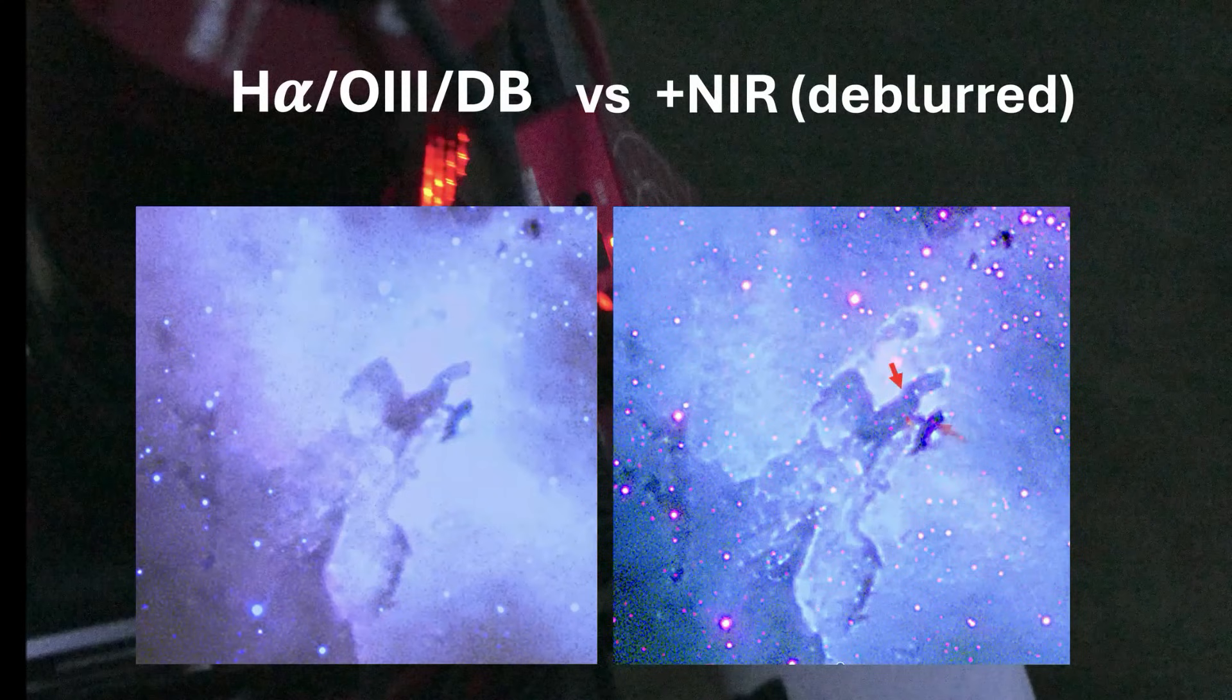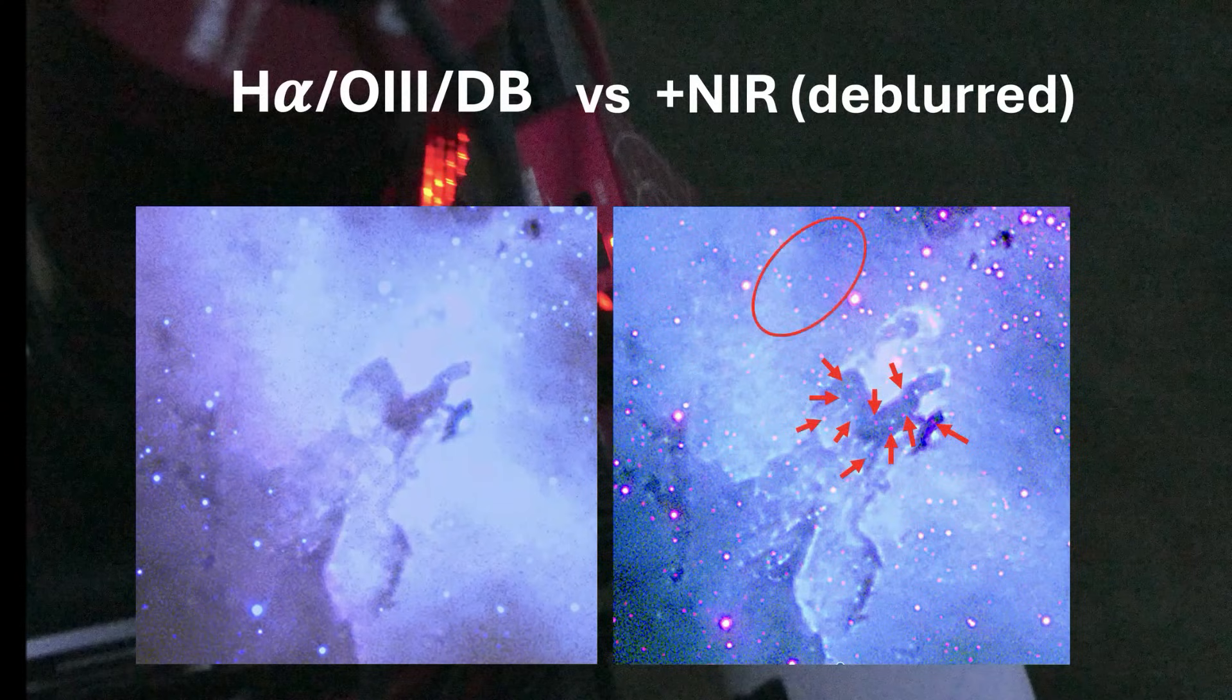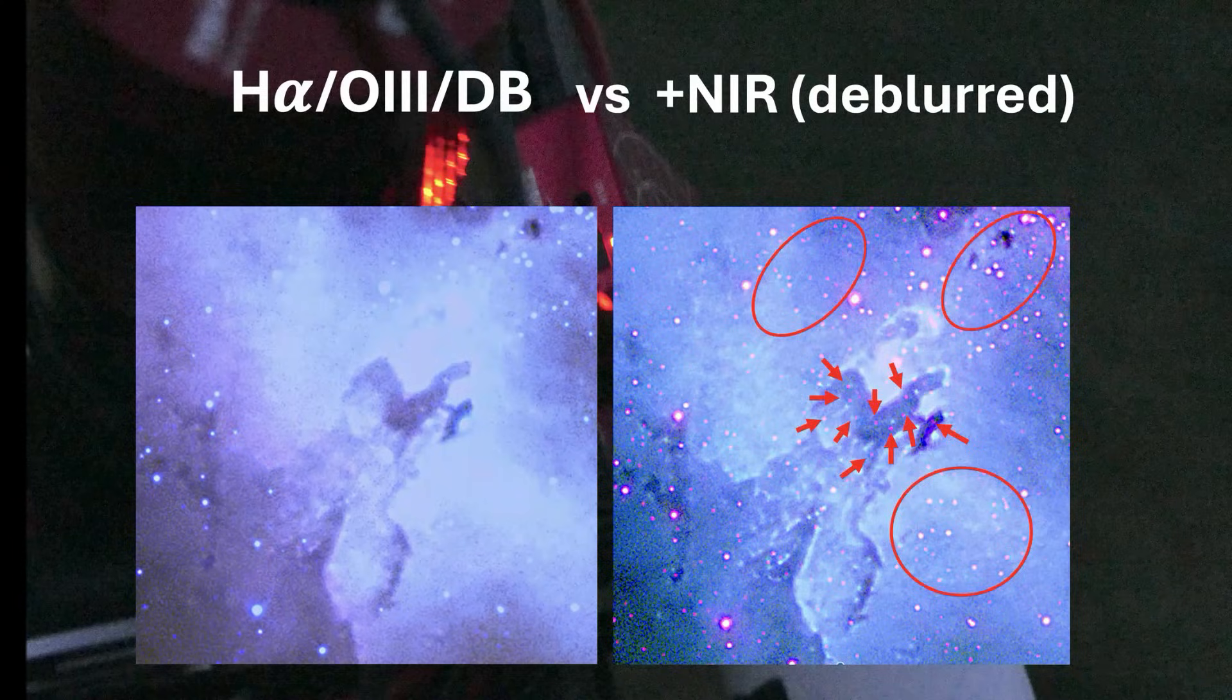The NIR channel brings in multiple stars in the pillars of creation and in addition in many other areas of the nebula.